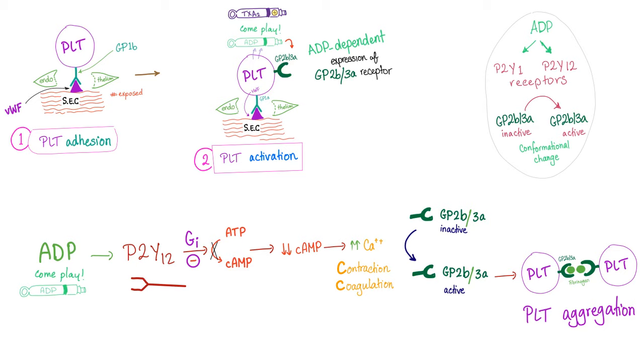So platelet adhesion, platelet activation, and then platelet aggregation thanks to ADP. P2Y12, which is a receptor for ADP, converts the GP2B3A from the inactive state into the active state. So let's do it this way: ADP whistling to other platelets via GP2B3A expression. But it's more complicated than that.